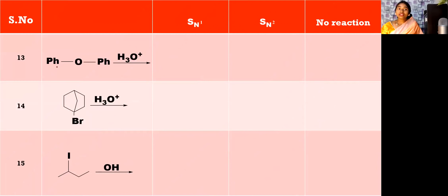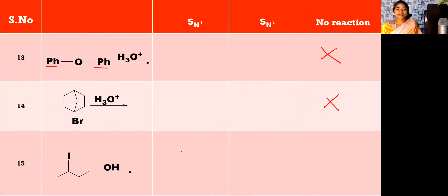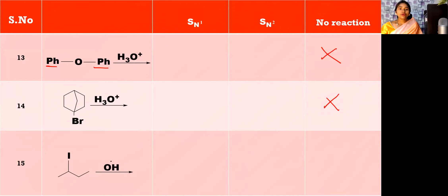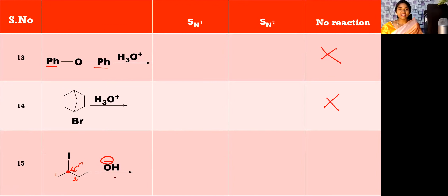Now see this case — both sides a benzene ring is present. When only benzene is present, it cannot involve in SN1 or SN2 reaction — there is no nucleophilic substitution. And coming to this one, a bridged halide is there — there is no reaction. See the next one: the nucleophile is a strong nucleophile, and this carbon is surrounded by two other carbons — so it is secondary. Secondary with a strong nucleophile favors SN2 reaction.